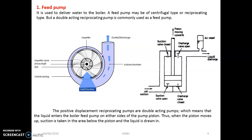In the case of the reciprocating pump, there are two types: single acting and double acting — a positive displacement pump. In the case of double-acting pumps, the liquid enters the boiler feed pump on either side of the piston. When the piston moves up, suction is taken in the area below the piston and the liquid is drawn in. This is the basic construction and working of the centrifugal as well as the reciprocating pump.